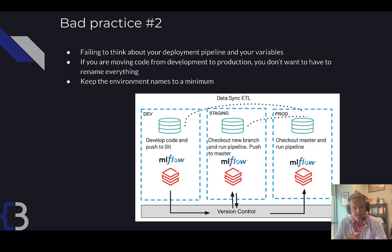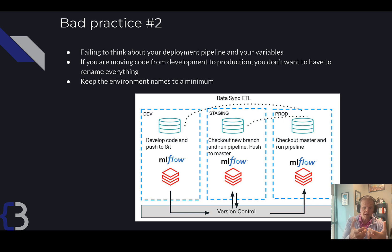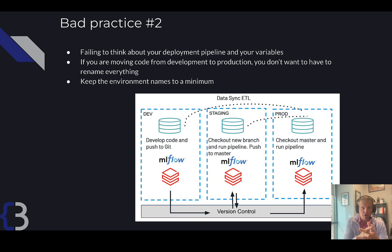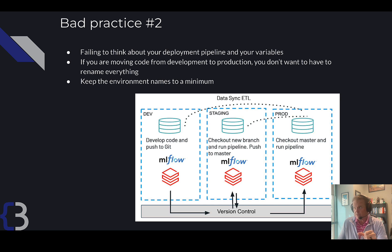Bad practice number two is failing to think about your deployment pipeline. When you deploy code, you're going to target an environment — dev, staging, or production. If you put the word dev in your schema or in your tables, you're going to have to use variables to name those things correctly all the time, and it becomes a lot more difficult. I recommend against putting the words dev, staging, or production in the schema or table name. Keep the environment names to the bare minimum.